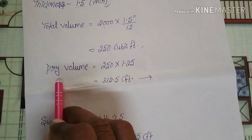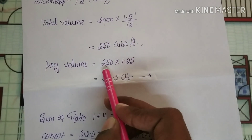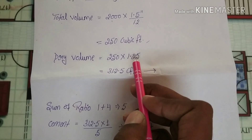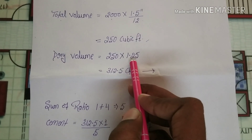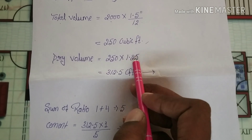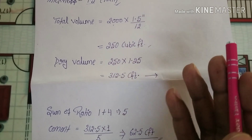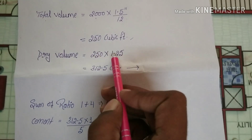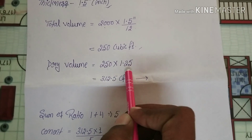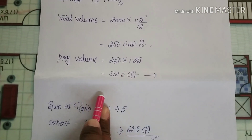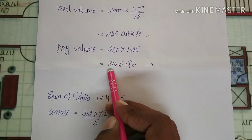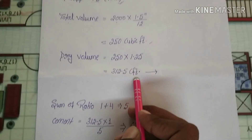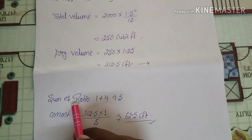Now the dry volume. The dry volume is 1.25 times the total volume. From 1.25 multiplied by the total volume, we get 312.5 cubic feet as our dry volume.